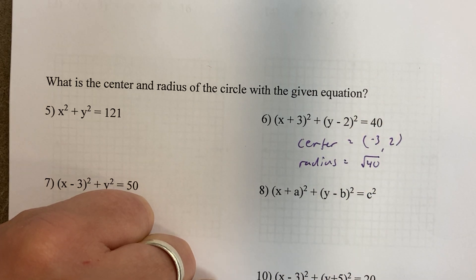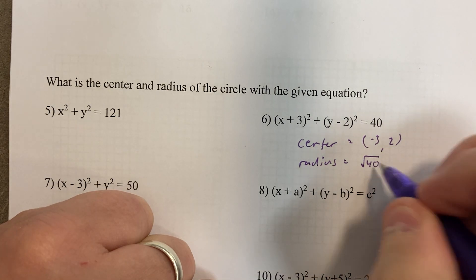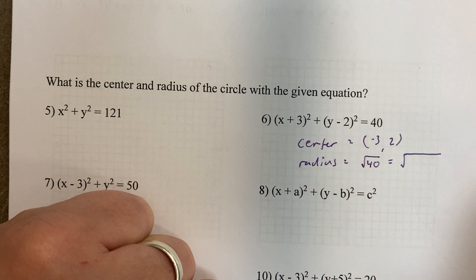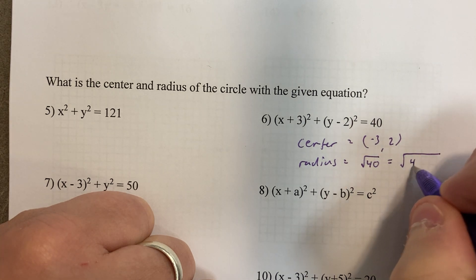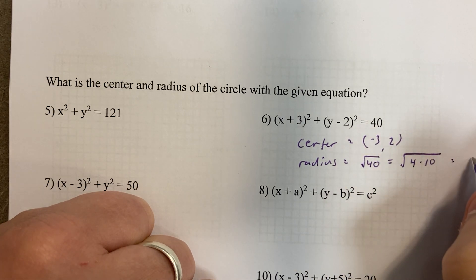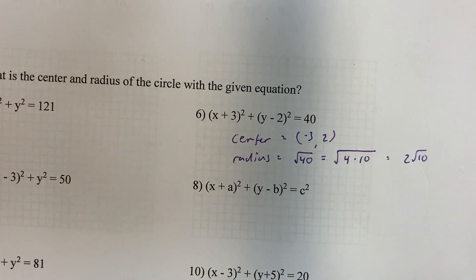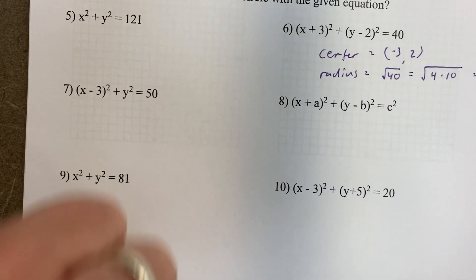Square root of 40, that's an interesting one. We can simplify that. 40 is... let's see, 8 times 5. 8's not a good number though. 4 times 10, yeah. So 2√10 when the 4 comes out. So the radius is 2√10.